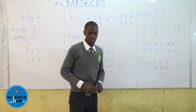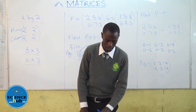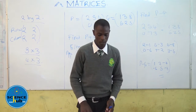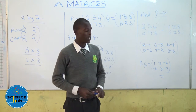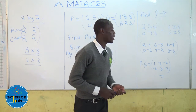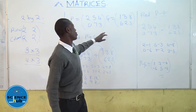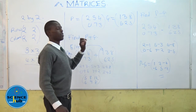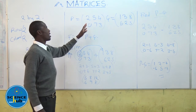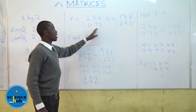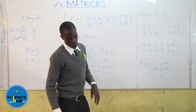Hence, in addition and subtraction of matrices, they are added and subtracted only if they are of the same order. What does same order mean? They have equal numbers of rows and columns.